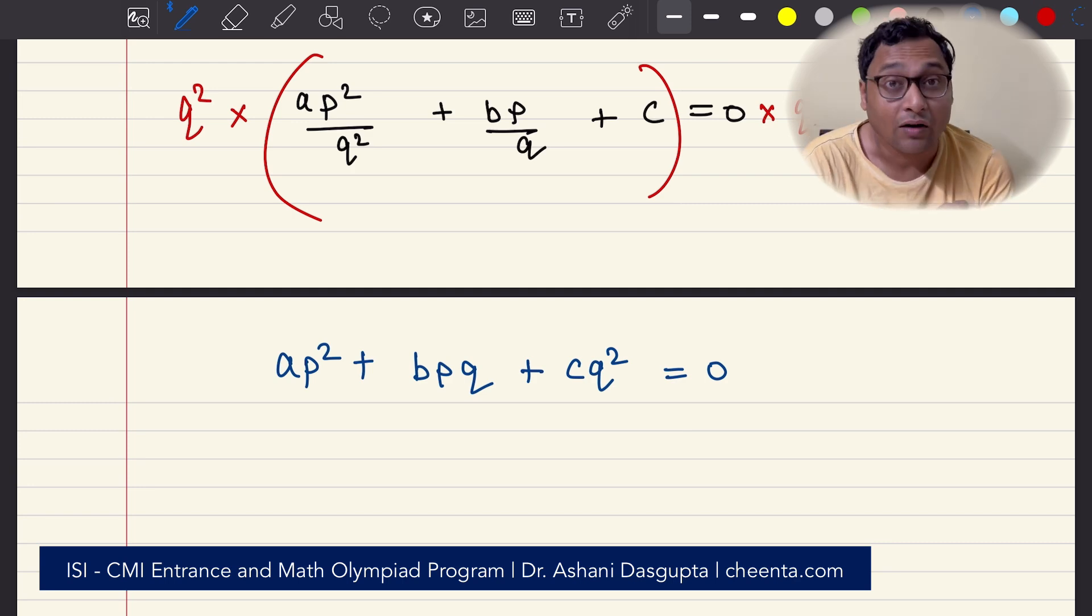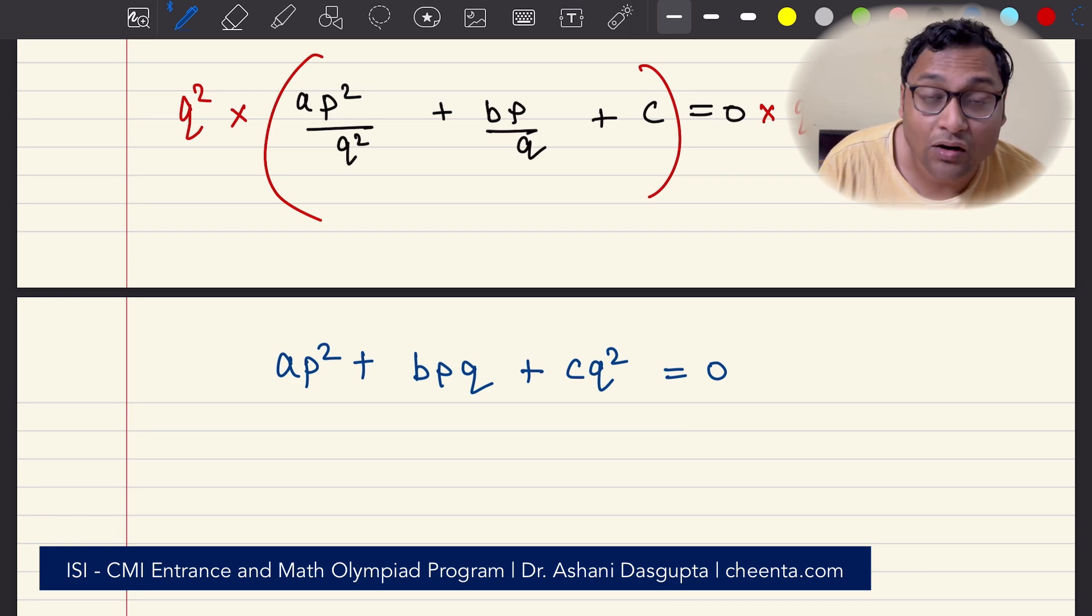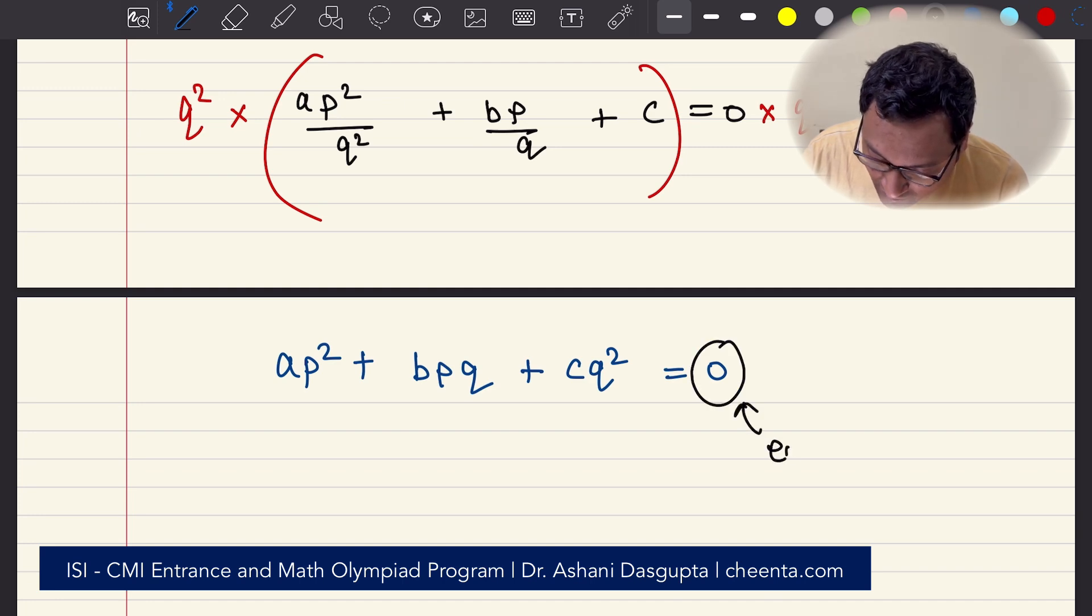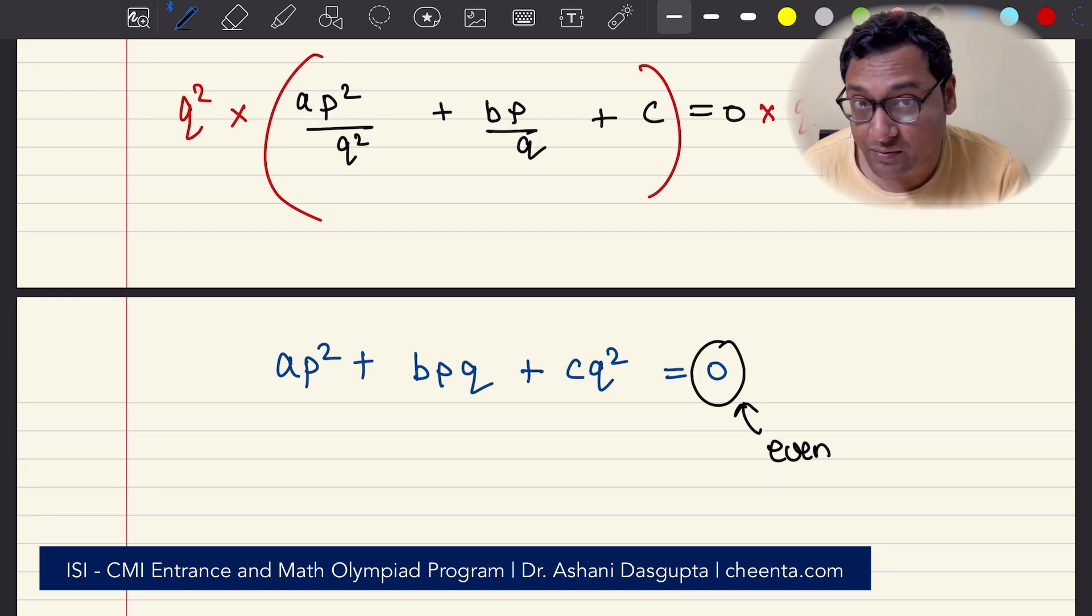Now starts the magic. We will write down the parity, that is the oddness and evenness of the numbers involved. Notice that 0 is an even number. Anything that is divisible by 2 is an even number. 0 is divisible by 2, so 0 is an even number.